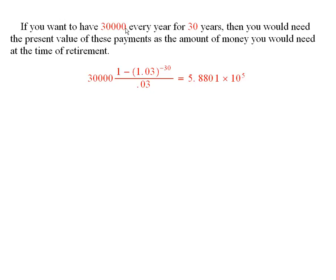In this problem, you want to have $30,000 every year for 30 years. Now, if you want to have that, that means that the amount of money that you have at the time of retirement, which is just going to sit in the bank and produce these payments,